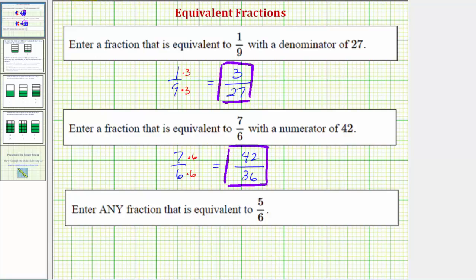Our third example is a little bit different. We're asked to enter any fraction that is equivalent to 5/6. Here there are many correct answers, because there's an infinite number of fractions that are equivalent to 5/6. To find an equivalent fraction though, because the only common factor between 5 and 6 is 1, we won't divide to find an equivalent fraction, we'll multiply.